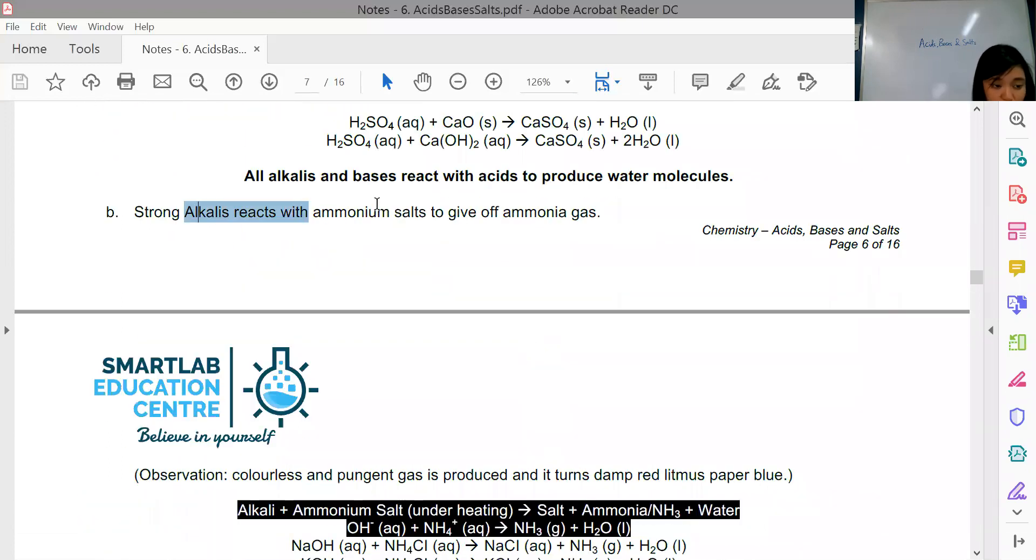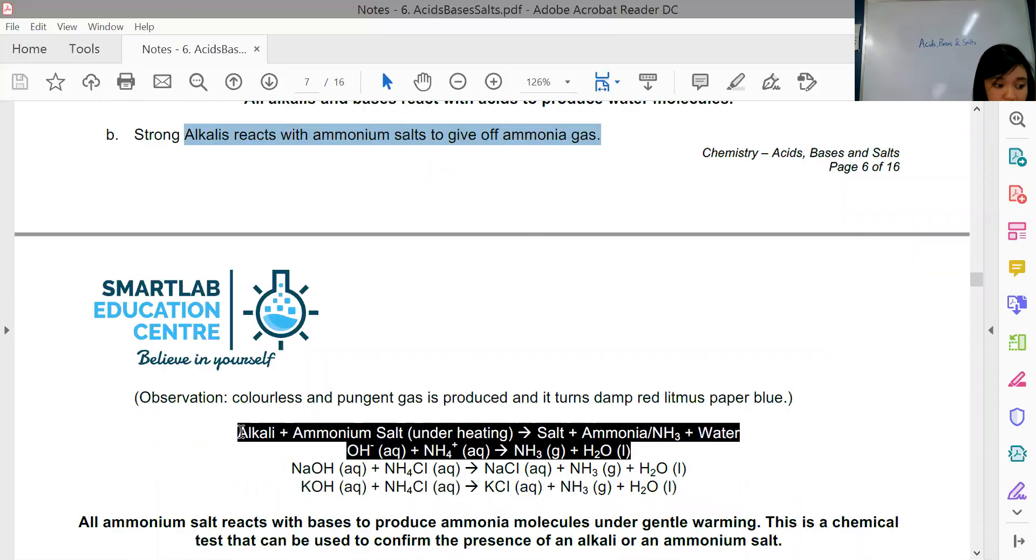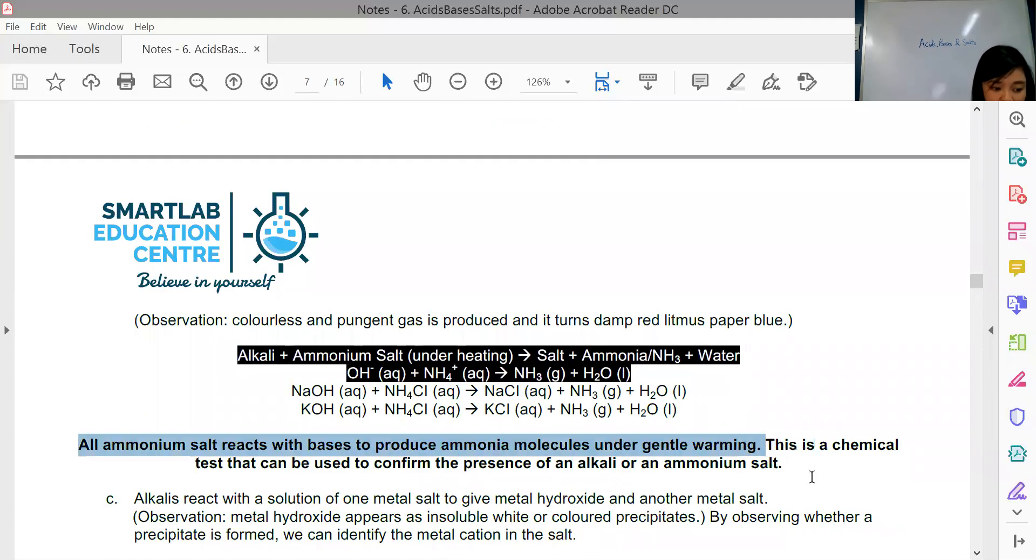Alkalines also react with ammonium salts to give off ammonia gas, so alkaline plus ammonium salts will give you salt plus ammonia gas and water. This is the chemical test that can be used to confirm the presence of alkaline.